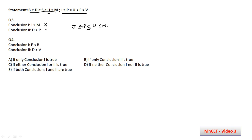The second conclusion says D > P. From statement 1: D ≥ S ≥ U, and from statement 2: U > P. So D ≥ U > P, meaning D will definitely be greater than P. This conclusion follows. Our answer is option B — only conclusion 2 is true.